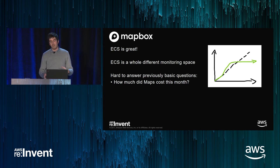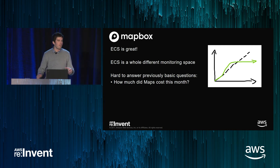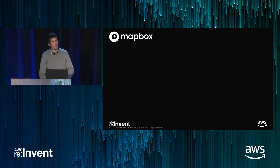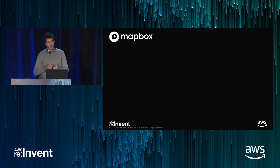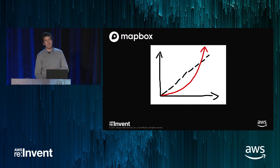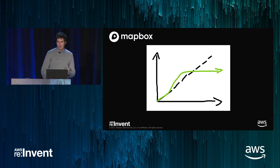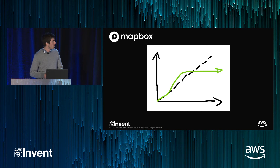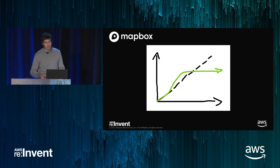ECS is great — we still love ECS, even though we had this problem. It's just a whole different monitoring space, and it makes some previously basic questions harder. A basic question like finance asking 'how much was maps this month for the board report?' — you're going to have to do some work to get to that answer. You could create the same monitoring environment as before — one cluster per service, one cluster per team — but that means adding tons of clusters and losing a lot of the ECS benefits. Instead, you can build a CloudWatch system, a pipeline to track resource consumption. You only have to build it once, it'll work for all your clusters, and you can really see the benefits of ECS.